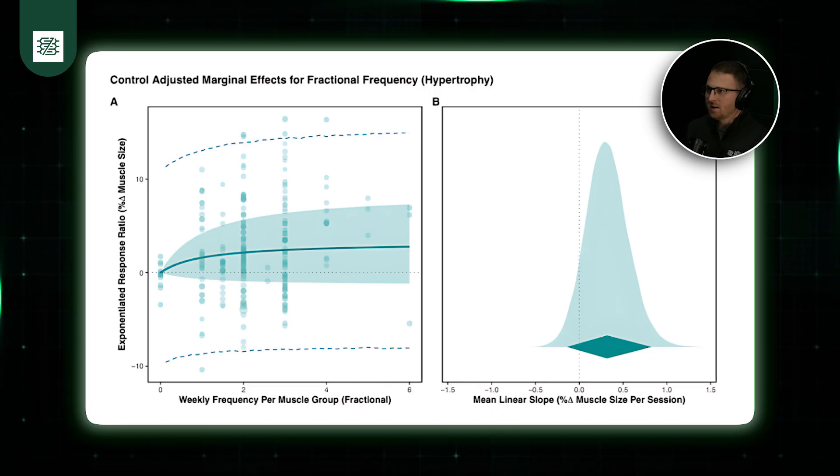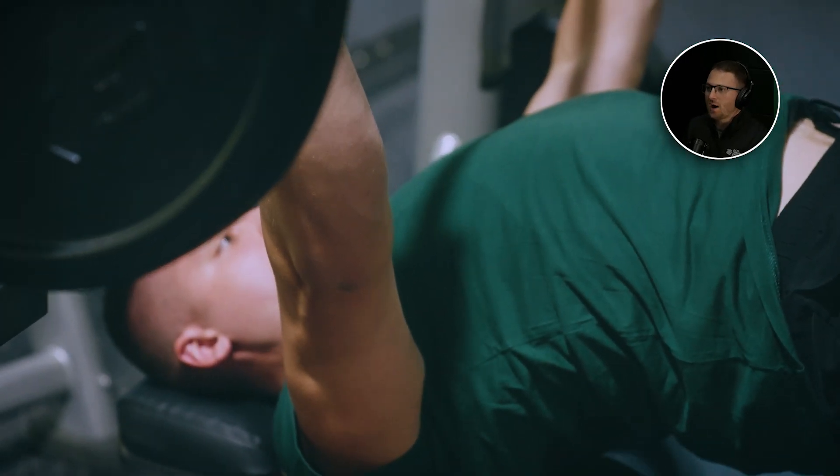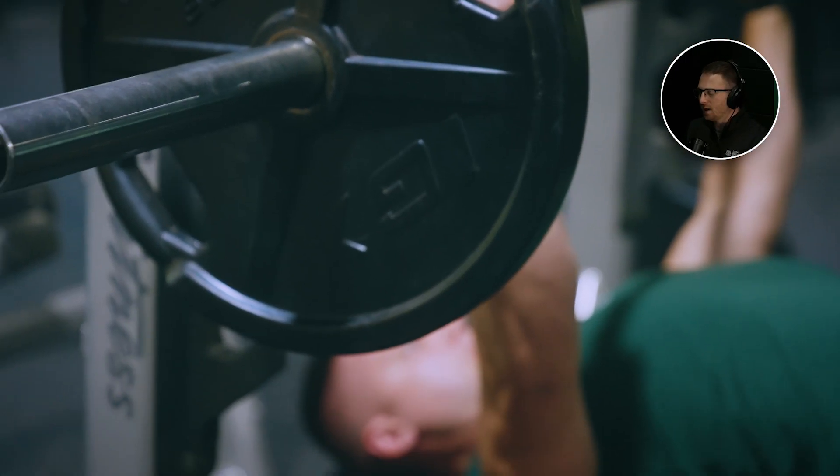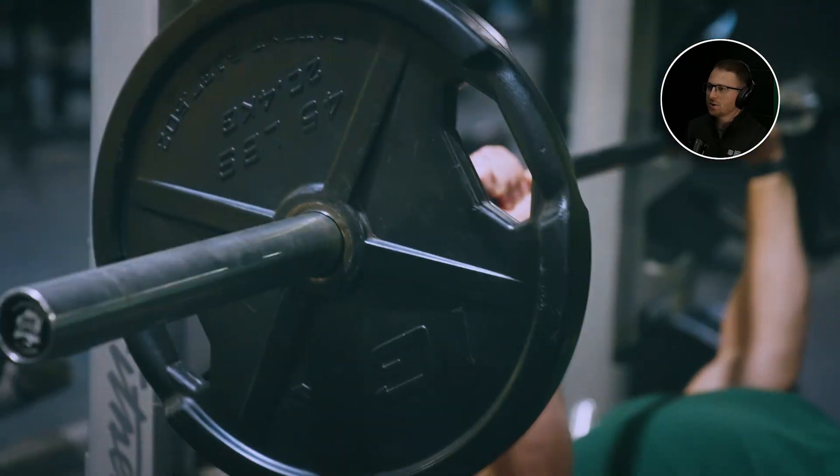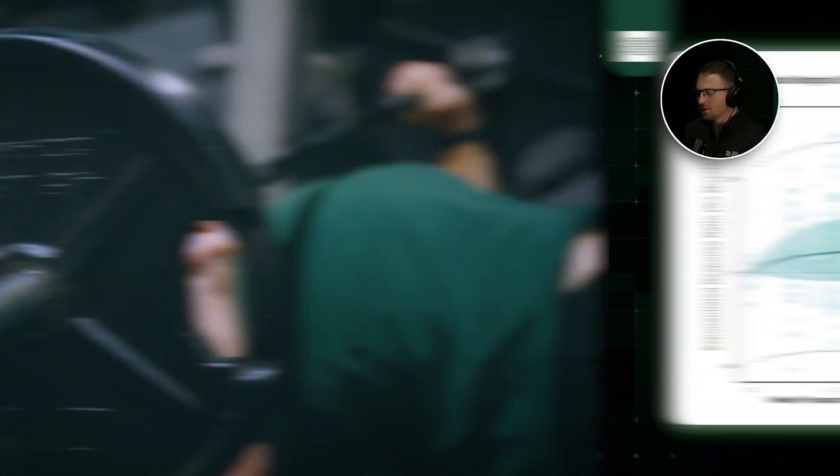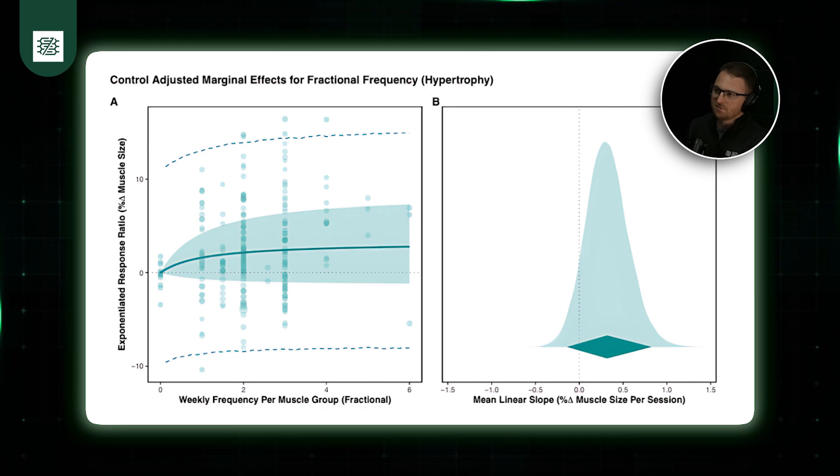Now, that said, there's still part of me that's a practitioner that needs to know from a directional intervention approach. If I'm going to work with a client, which way am I going to hedge my bets? And I think that's ultimately what we try to do here is appeal to both of those approaches, both in what we reported with some of the probabilities.